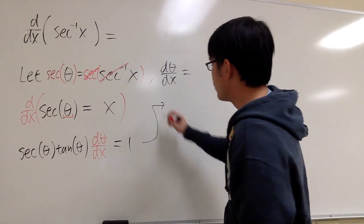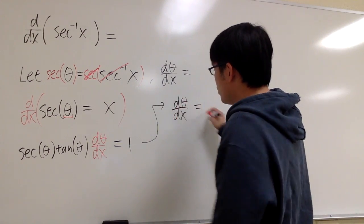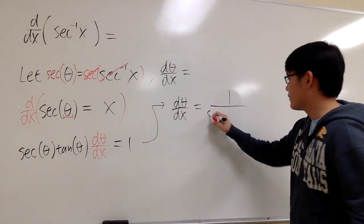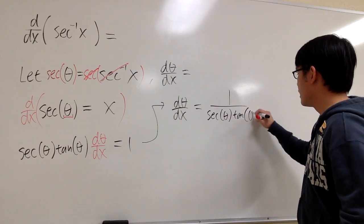So in other words, we know dθ/dx, it will be 1 on the top over sec(θ)tan(θ).